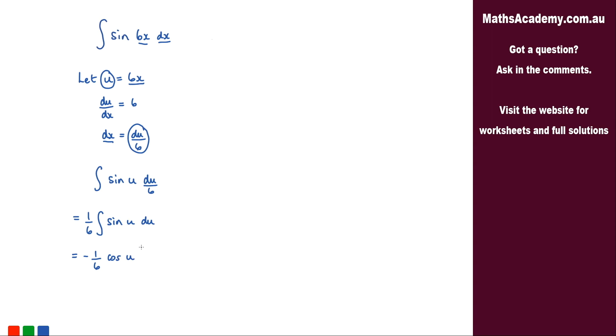Now the last step is to substitute back in for u. And we know that u is 6x. So let's put that back in. We get negative 1 over 6 cosine of 6x. And then just add on the constant of integration.